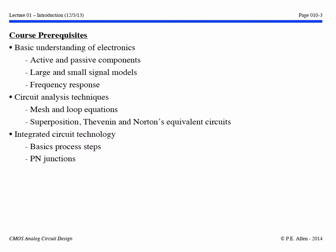This slide deals with the course prerequisites. It starts with a basic understanding of electronics, which includes active and passive components, large and small signal models, and frequency response. It also includes circuit analysis techniques such as mesh and loop equations, and circuit concepts such as superposition and Thevenin and Norton's equivalent circuits. Finally, it includes integrated circuit technology, understanding the basic process steps and how PN junctions can be used to understand the technology.